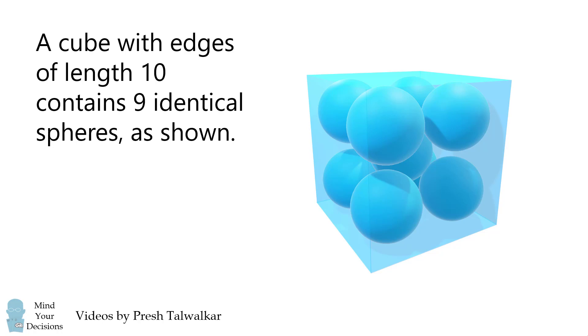One sphere is in the center of the cube. Above it are four spheres that are tangent to it and tangent to each of the four corners of the cube. Below it is another layer of four spheres that are tangent to the center sphere and tangent to the four corners of the cube. What is the radius of each sphere?